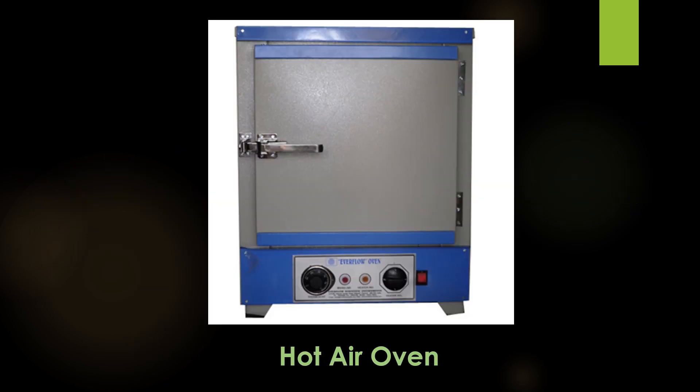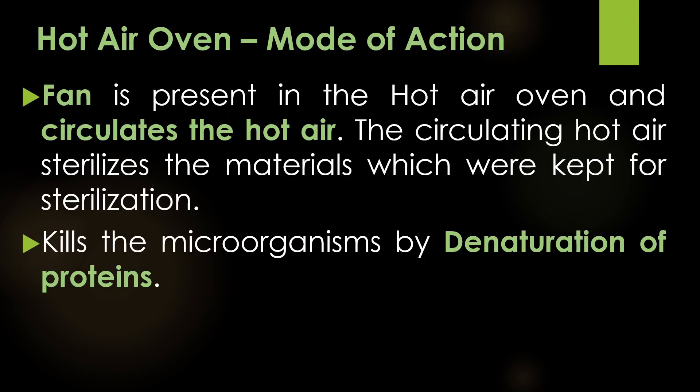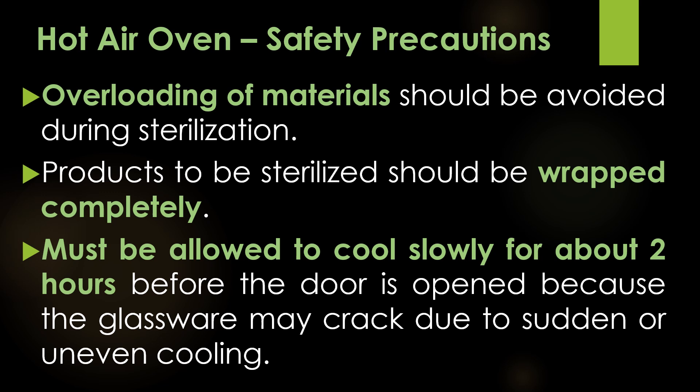This is the image of the hot air oven widely used for sterilization by dry heat. The fan present in the hot air oven circulates the hot air within it, and this circulating hot air sterilizes the materials kept inside. The hot air oven kills microorganisms by denaturation of proteins. Safety precautions: overloading of material should be avoided; products to be sterilized should be wrapped completely with paper; and the hot air oven must be allowed to cool slowly for about 2 hours before the door is opened, because glassware may crack due to sudden or uneven cooling.